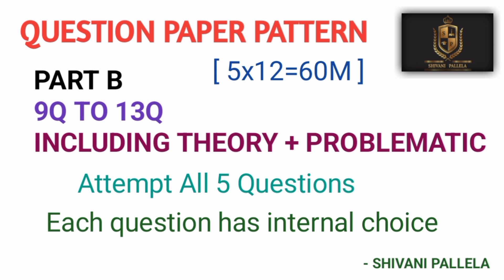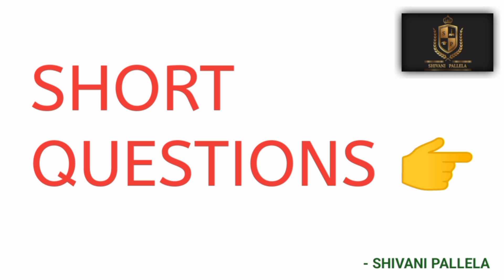For Part B, questions 9 to 13 include both theory and problematic. You need to attempt all questions, and each question has an internal choice — for example, Question 9A or 9B, you attempt any one. Some students ask if they write both A and B will they get double marks — the answer is no. If you write both A and B, marks will be considered for only one question. Don't waste your time doing that in the examination.